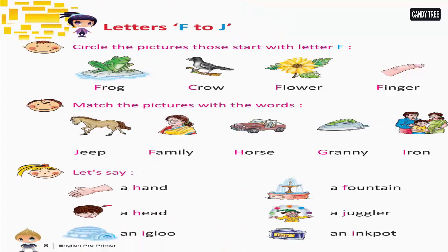Letters F to J. Circle the pictures that start with letter F. Match the pictures with the words. Let's say: A hand, A head, An igloo, A fountain, A juggler, An ink pot.